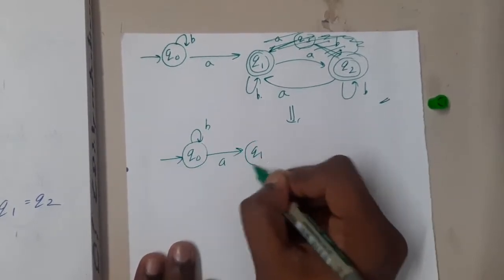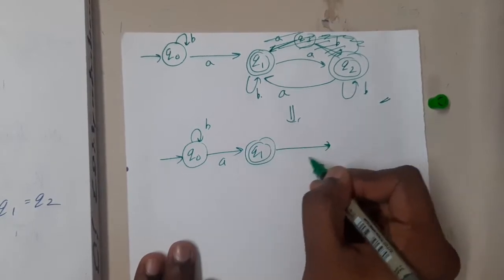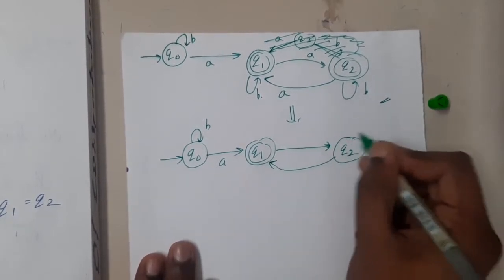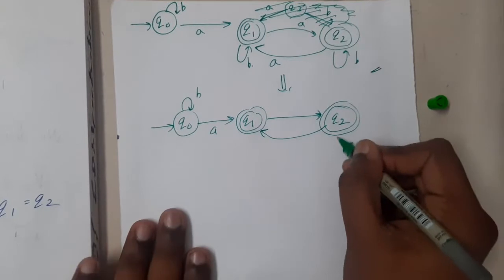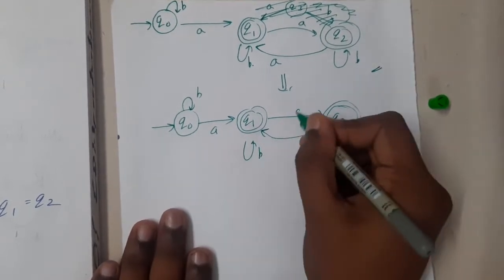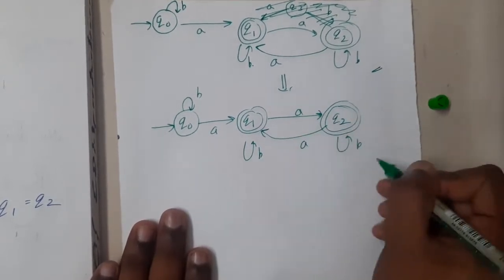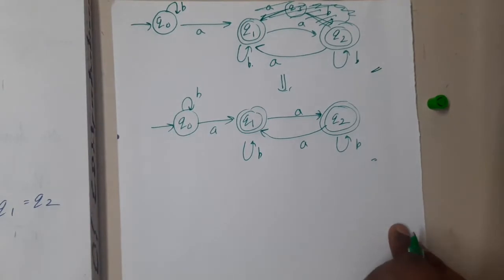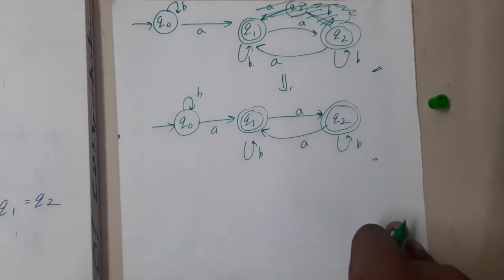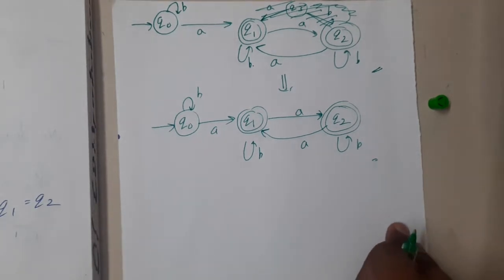I'll be taking multiple examples with respect to this minimization, so don't worry if you don't have a completely clear idea yet — you will understand it slowly. So now we got this reduced diagram as our result. There are no unreachable states remaining, so now we can search for equal states.